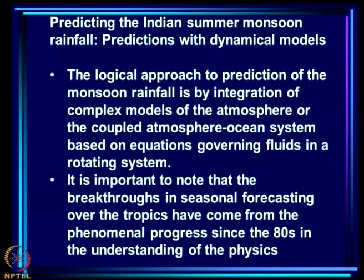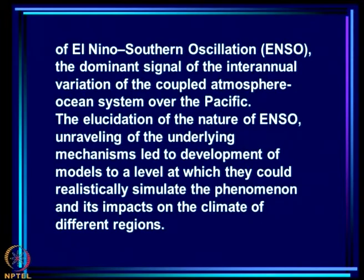The logical approach to prediction of monsoon rainfall is by integration of complex models of the atmosphere or the coupled ocean-atmosphere system based on equations governing fluids in a rotating system. Breakthroughs in seasonal forecasting over the tropics have come from the phenomenal progress since the 1980s in understanding the physics of the El Niño-Southern Oscillation phenomena — ENSO — which is the dominant signal of inter-annual variation of the coupled atmosphere-ocean system over the Pacific.